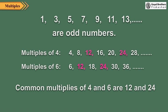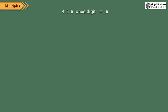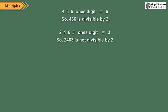To check whether a number is divisible by another number or not, we divide the second number by the first one. But in many cases, we can check it just by observing the given number. A number is divisible by 2 if its 1's digit is 0, 2, 4, 6, or 8. For example, the 1's digit of 4,36 is 6, so it is divisible by 2. The 1's digit of 2,463 is 3, so it is not divisible by 2.